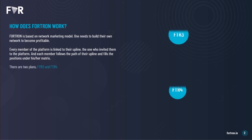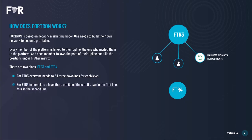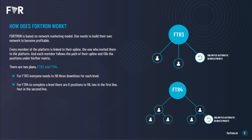As you can see, we have two plans: FTR3 and FTR4. For FTR3, everyone needs to fill three downlines for each level. Whereas on FTR4, to complete a level, there are six positions to fill — two in the first line and four in the second line.